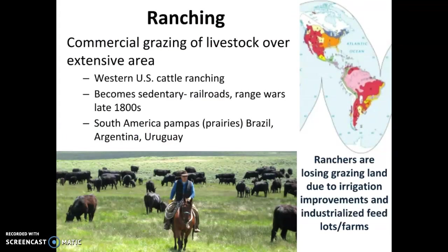Another form is ranching. Commercial livestock ranching is the commercial grazing of livestock over an extensive area, meaning an awful lot of land used non-intensively — you graze livestock across it, then move on to another patch and let it regrow. The western United States is known for cow ranching. South America — the pampas, the highland prairies in Brazil, Argentina, and Uruguay — are becoming increasingly known for ranching.